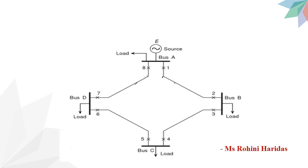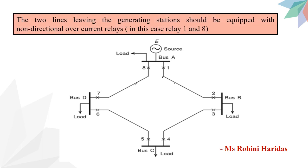Now let us discuss the time-graded overcurrent protection applied to the ring-main system. In this arrangement, power can flow in both directions under fault conditions. Therefore, it is necessary to grade in both directions around the ring and also to use directional relays. In order to achieve selectivity — isolating only the faulty section — we have to follow certain rules.